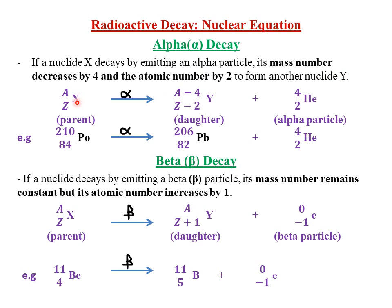we have a parent nuclide X which has a mass number A, then atomic number Z. It is decaying by releasing an alpha particle. An alpha particle is usually represented by helium, which has a mass number of 4 and atomic number 2. So this parent nuclide X is decaying by releasing an alpha particle, giving us a daughter nuclide Y.